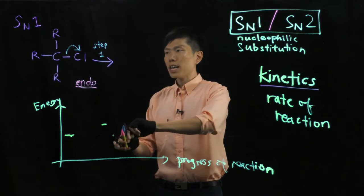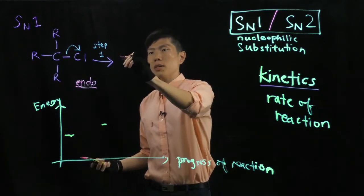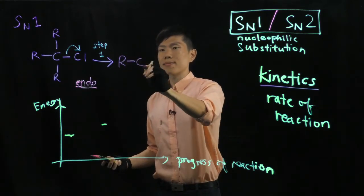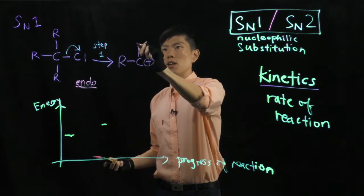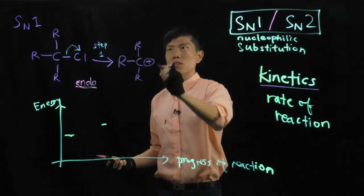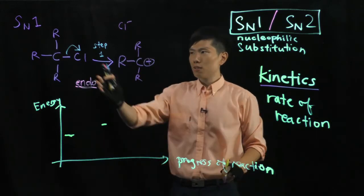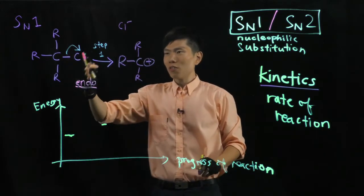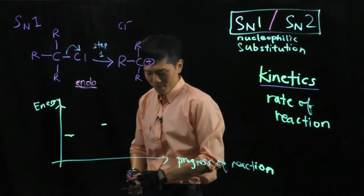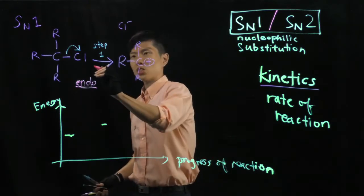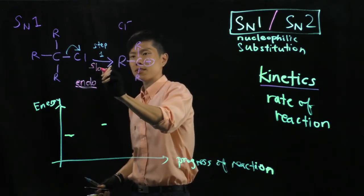Now, what does it form? Recall that after the first step, it will form a carbocation. Positive charge, R and R. Don't forget, you have a chloride being ejected. Now, since the reaction only involves bond breaking, it is a slow step. This is slow.